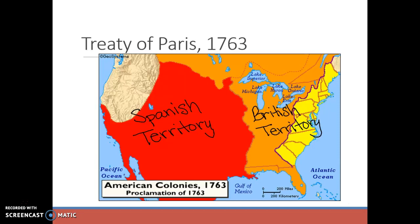They do fight for several years, and eventually this war will end with a treaty called the Treaty of Paris 1763. Write that date down, because in this whole unit there are like three different treaties of Paris, so we need to distinguish them by the year in which they were signed. This treaty that ends the French-Indian War is called the Treaty of Paris 1763.